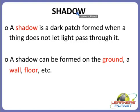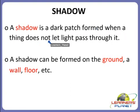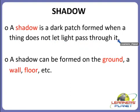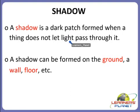This dark patch is called a shadow. So now we will study about shadow. A shadow is a dark patch formed when a thing does not let the light pass through it. This dark patch, which does not let the light pass, is called a shadow.